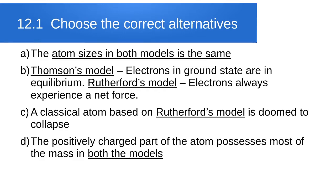Question c: a classical atom based on dash is doomed to collapse. A classical atom based on Rutherford's model is doomed to collapse because Rutherford's theory could not give a satisfactory explanation of how the electron would stay in its orbit and not decay and fall into the nucleus.